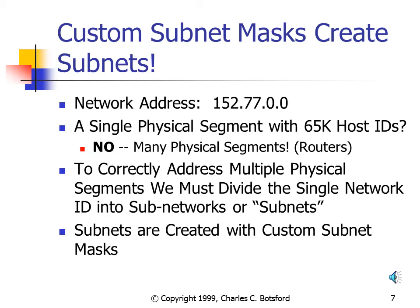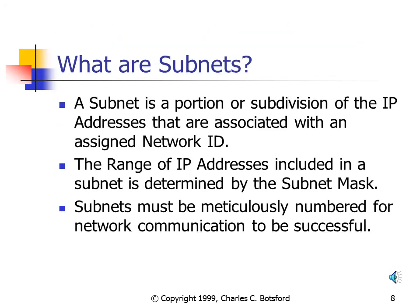The custom subnet mask allows us to create subnets. A subnet is a portion, or subdivision, of the IP addresses associated with a larger network ID. The range of IP addresses in a subnet is determined by the subnet mask, and different subnet masks create different ranges of IP addresses. When we start numbering our addresses, the subnets and associated physical segments must be meticulously numbered — otherwise network communication will not be successful.